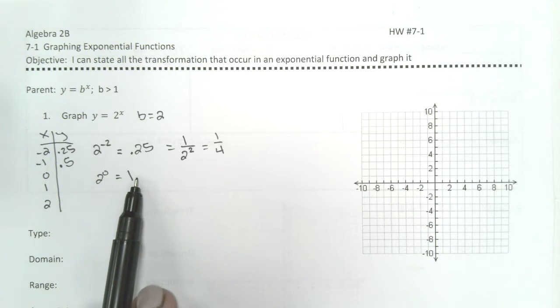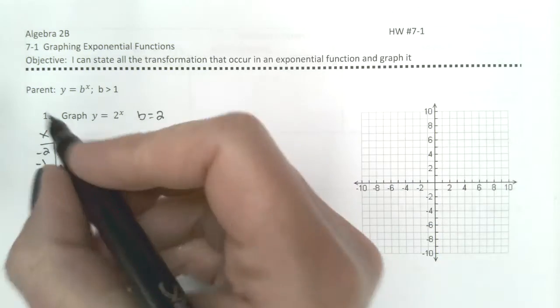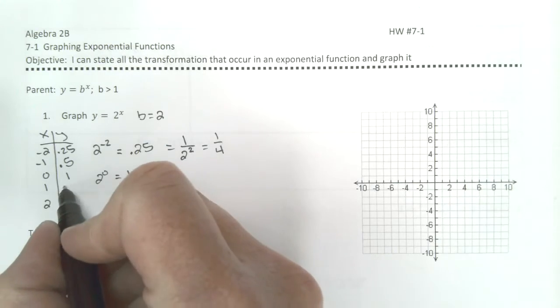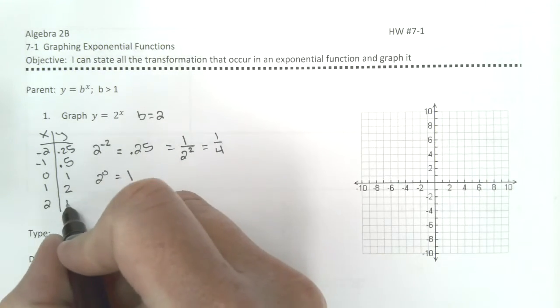2 to the first is 2. And 2 to the second is 4. We're going to plot these points.